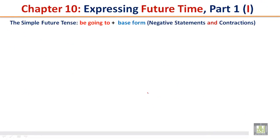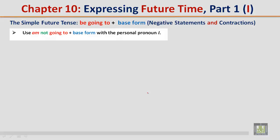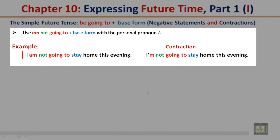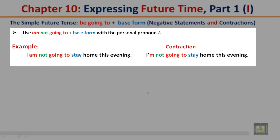The simple future tense: be going to plus the base form — negative statements and contractions. Use am not going to plus the base form with the personal pronoun I. Example: I am not going to stay home this evening. Contraction: I'm not going to stay home this evening.